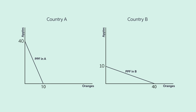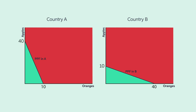In the absence of trade, called autarky, one cannot consume more than what one produces. So consumption is limited to the combinations of apples and oranges to the left of the PPF in green. All combinations to the right of the PPF, the red area, are unattainable.